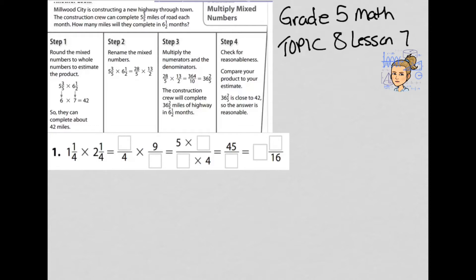Here's a worked example. I have 1 and 1 fourth times 2 and 1 fourth. So when I multiply mixed numbers, I have to change them into fractions greater than 1 to continue with the math. So doing that, I simply work the problem like this. I do 4 times 1, which is 4, and then I add 1 to 4, so that's 5. So my new fraction is 5 fourths.